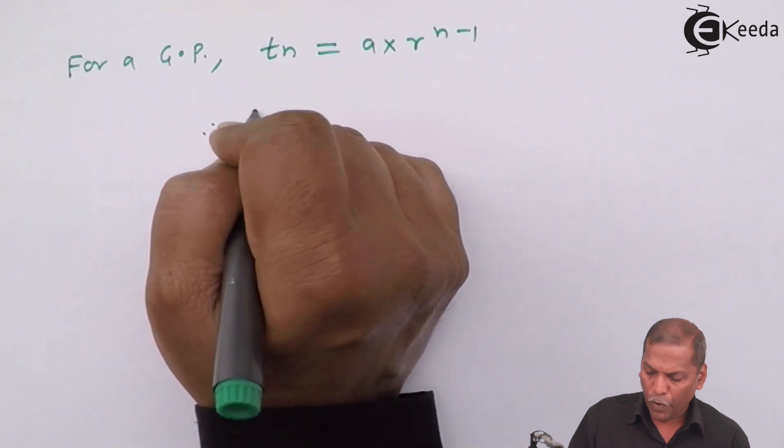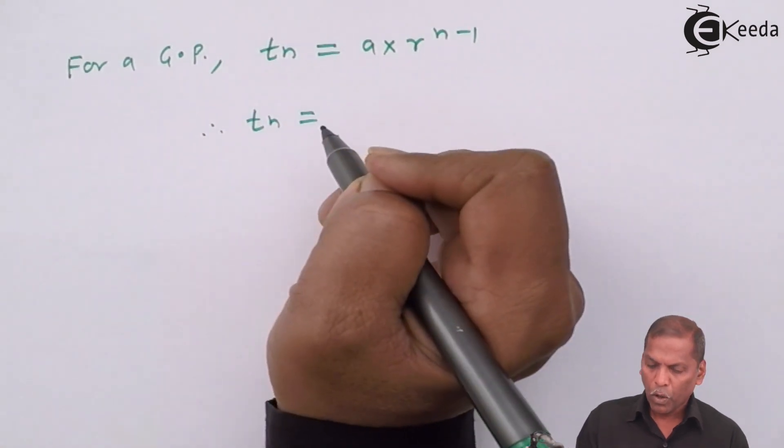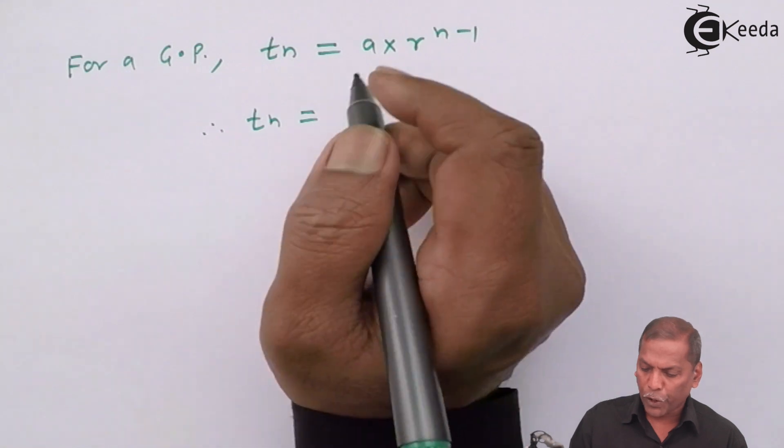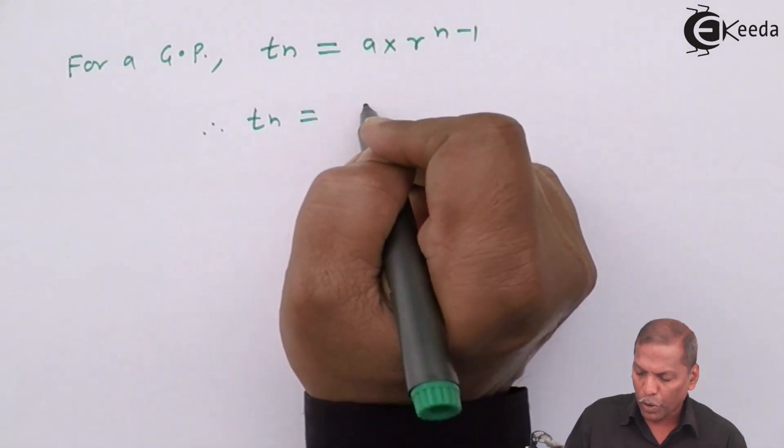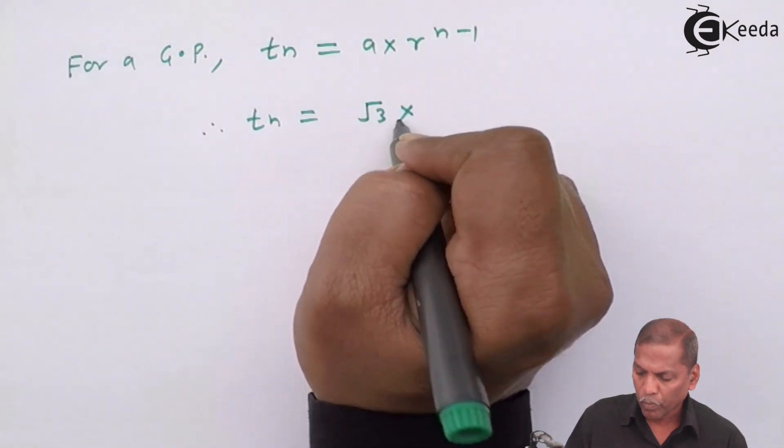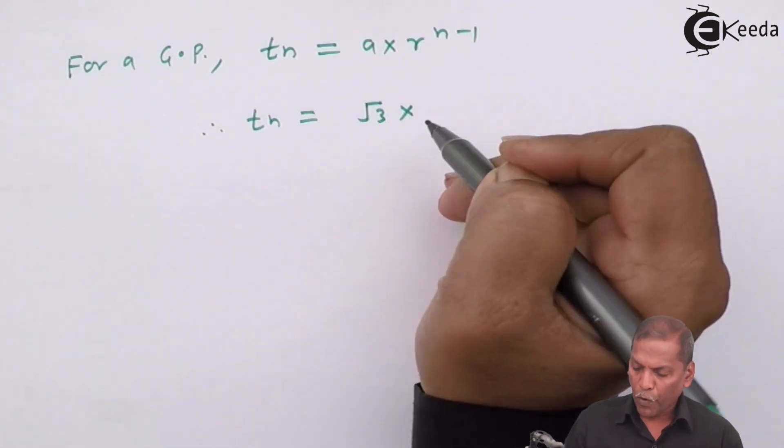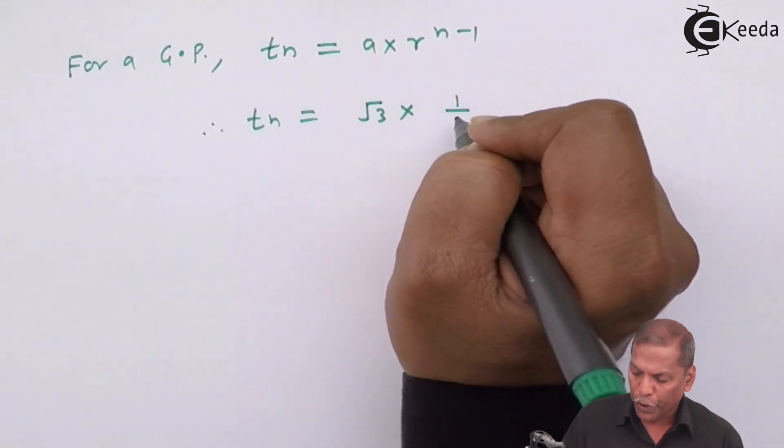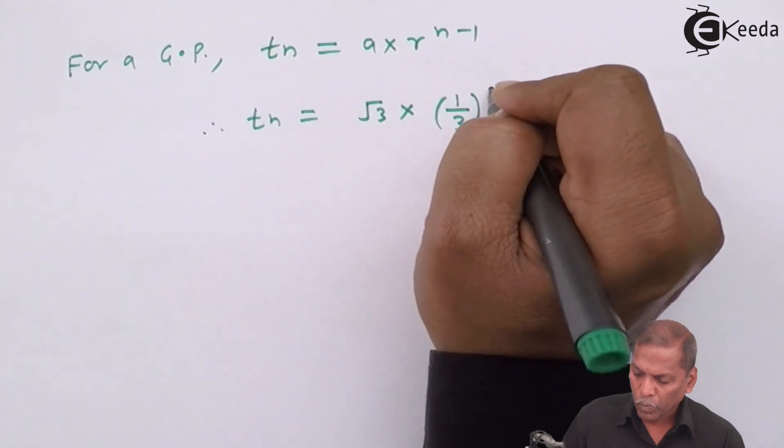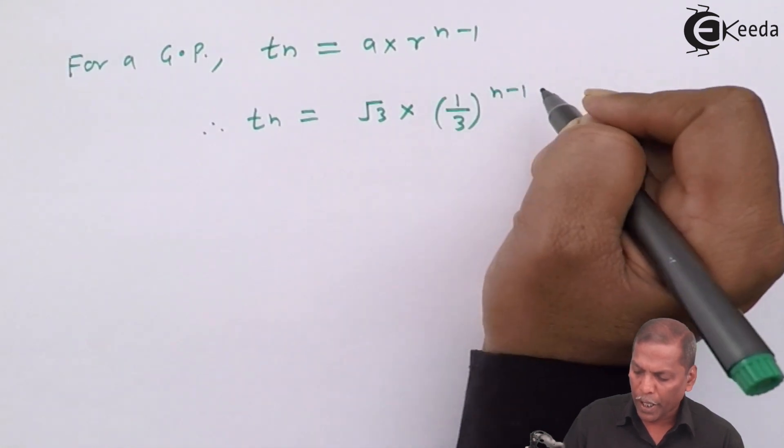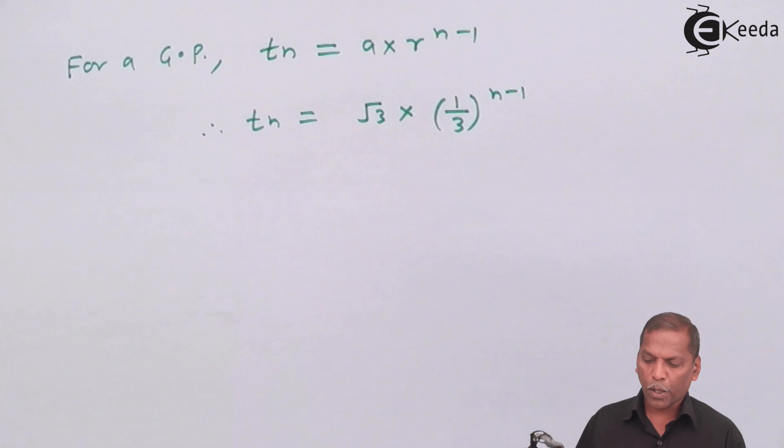Therefore, Tn equals, for a we substitute root 3, and for r we substitute 1 upon 3 whole bracket raised to n minus 1.